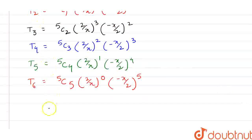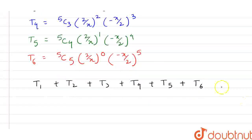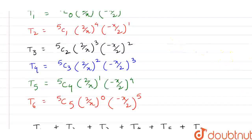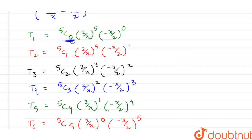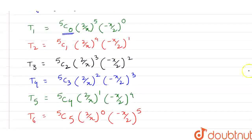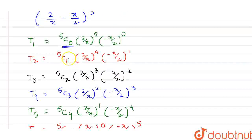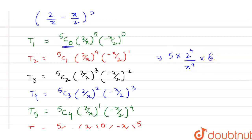Now, if we find the sum of these terms, that is T1 + T2 + T3 + T4 + T5 + T6. We know that 5C0 equals 1, so T1 can be written as 1 times (2y/x)^5. For T2, 5C1 equals 5, so T2 equals 5 times (2^4 / x^4) times (−x/y²).